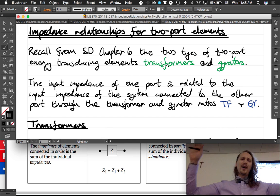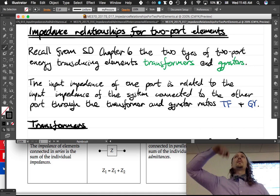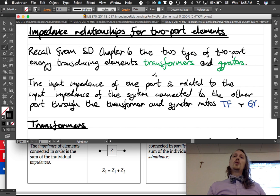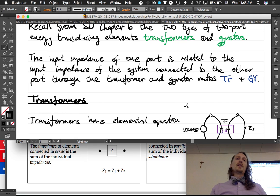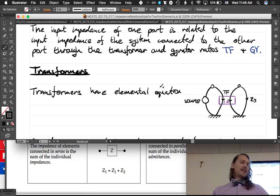So let's do two port. Recall from chapter six of the system dynamics text that there are two types of two ports: energy transducing elements, transformers and gyrators. The input impedance of one port is related to the input impedance of the system connected to the other port through the transformer and gyrator ratios.